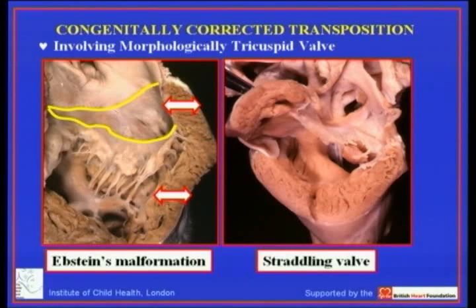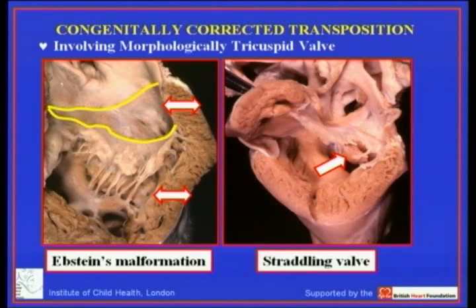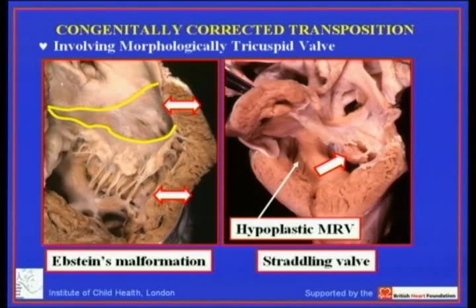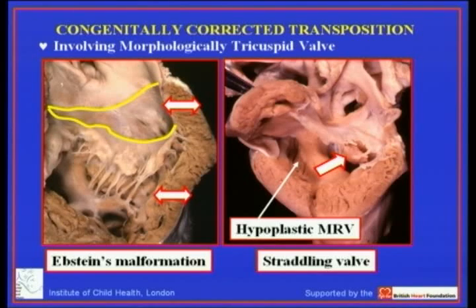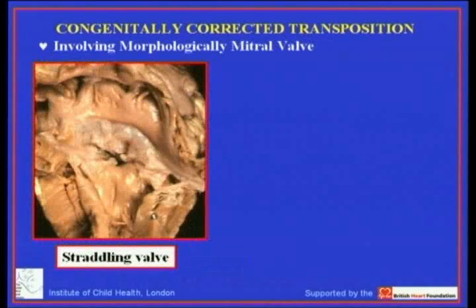Here is an example of straddling of the morphologically tricuspid valve — the tension apparatus passing through to the morphologically left ventricle, with overriding of the valve orifice. Depending upon the degree of overriding, the more overriding, the more hypoplastic the morphologically right ventricle becomes. Consequently, in such settings you may need to adopt a functionally univentricular surgical repair.